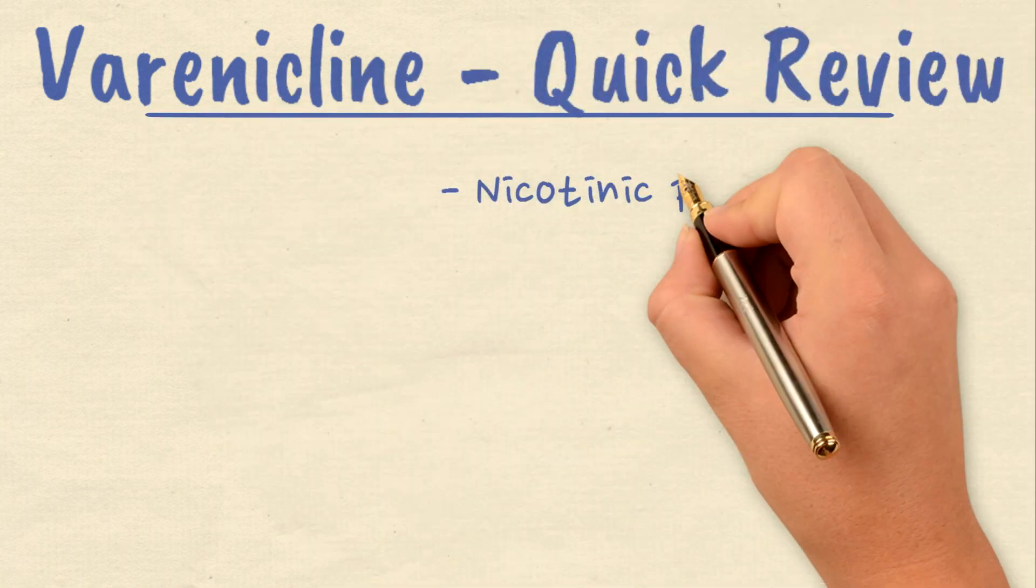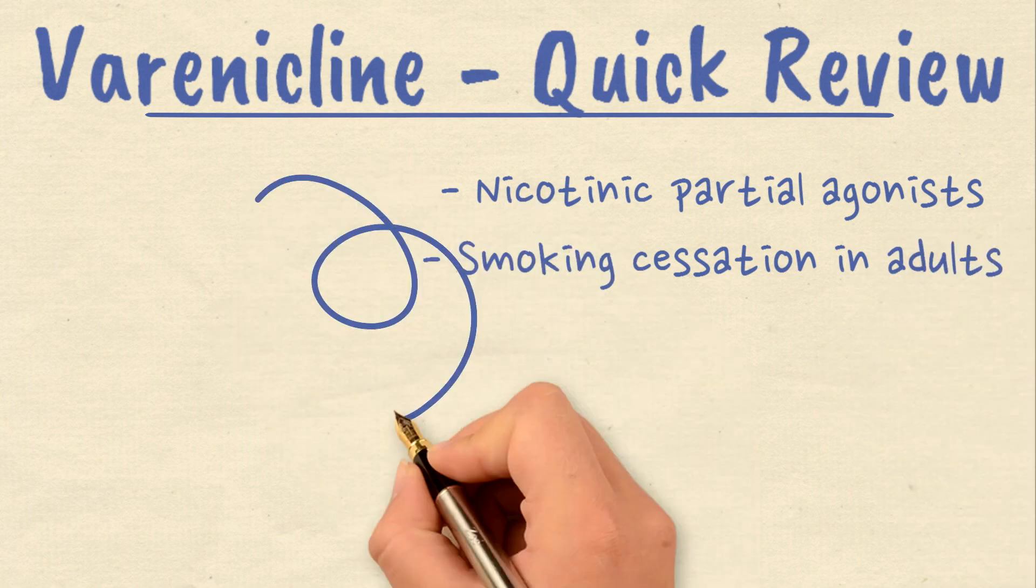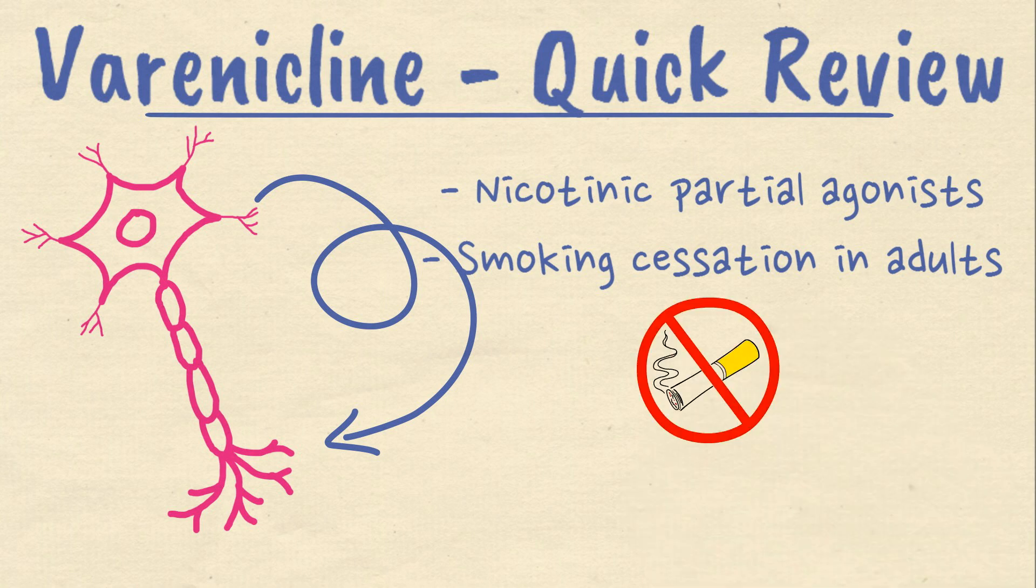Varenicline is a nicotinic partial agonist. It has partial agonist activity towards nicotinic acetylcholine receptors. It is used in adults for smoking cessation.